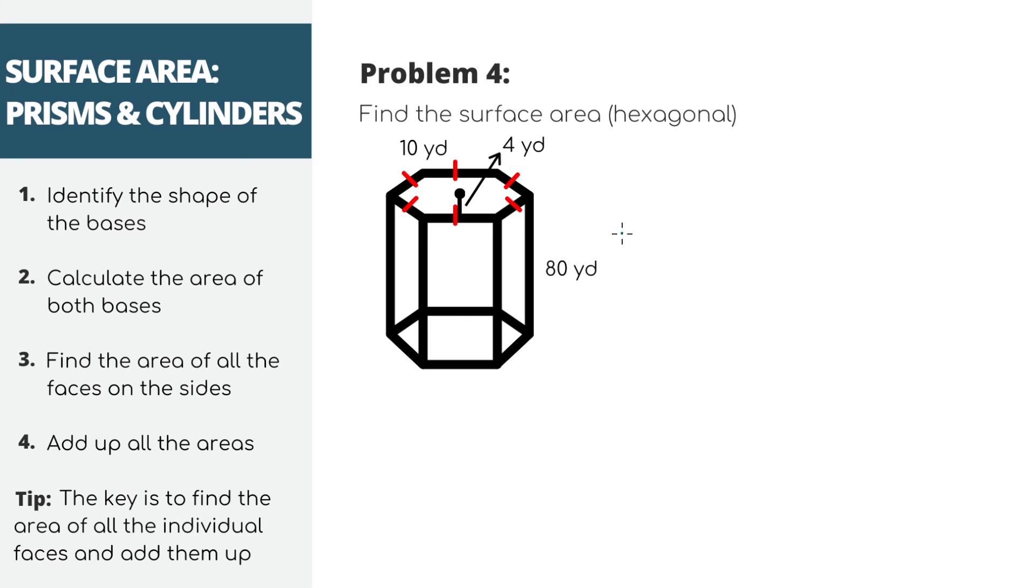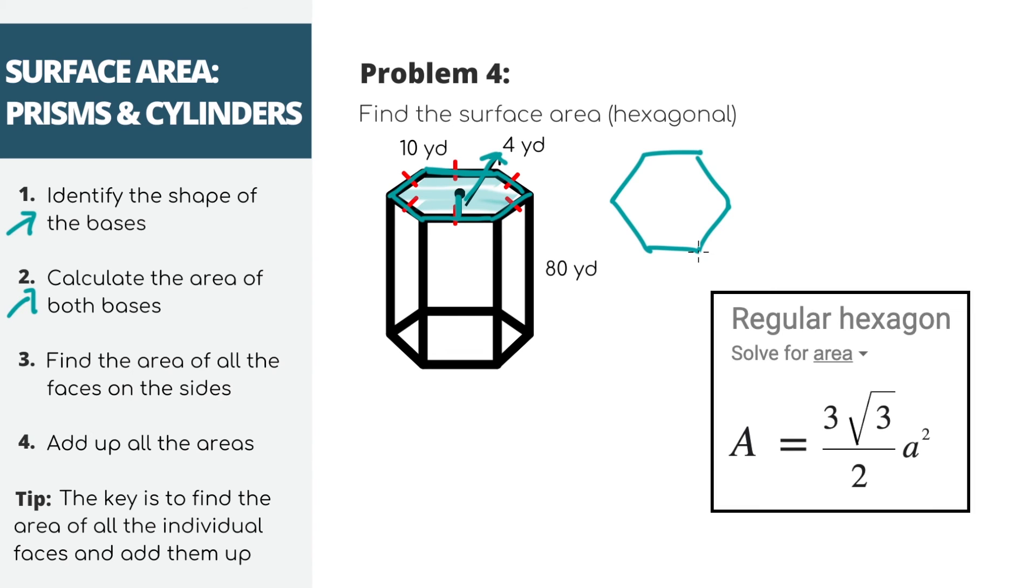Last challenge problem. This is a hexagonal prism. Well, the shape of the base is a hexagon, where all 6 sides are 10 yards. And this little length from the center to one of the sides is 4 yards. If I redraw it from the top, it looks like this. And I don't know about you, but I've never memorized the formula of a hexagon, although apparently there is one.